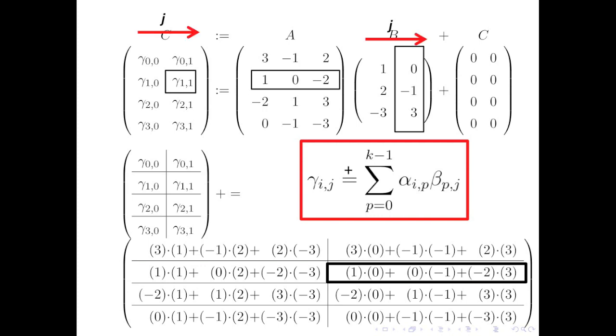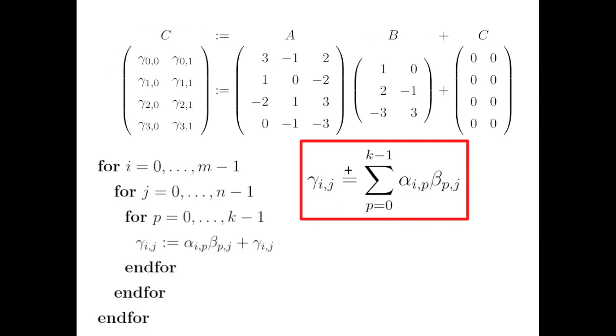The index j is associated with the columns of c and b. The index i with the rows of c and a. And the index p we use to compute the dot product. This leads us to an algorithm with three nested loops.